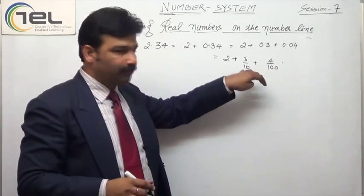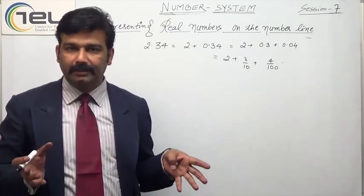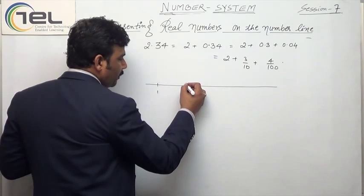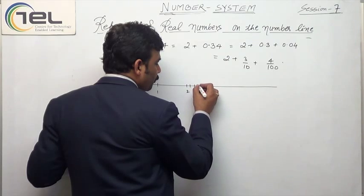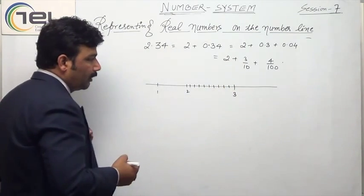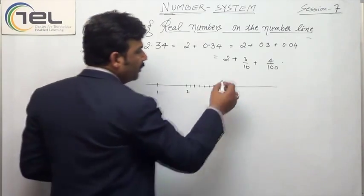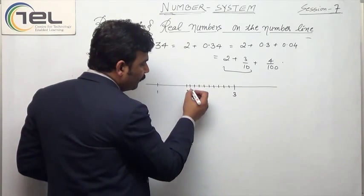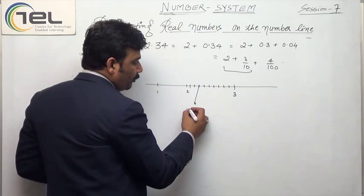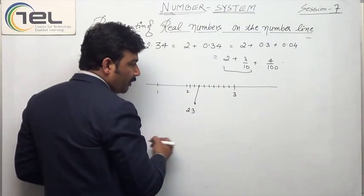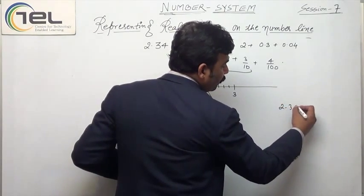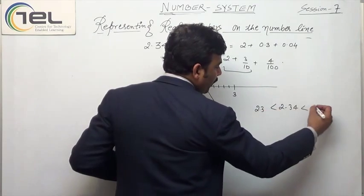That means the 100th part of this. Am I able to make it the 100th part? Yes. We will have this as 1, this as 2, then 1, 2, 3, 4, 5, 6, 7, 8, 9 — and this is 3. First of all, I have to represent 3 by 10. So this represents 2.3 and this represents 2.4. Now, since 2.34 is lying between 2.3 and 2.4, I had to take these two steps.